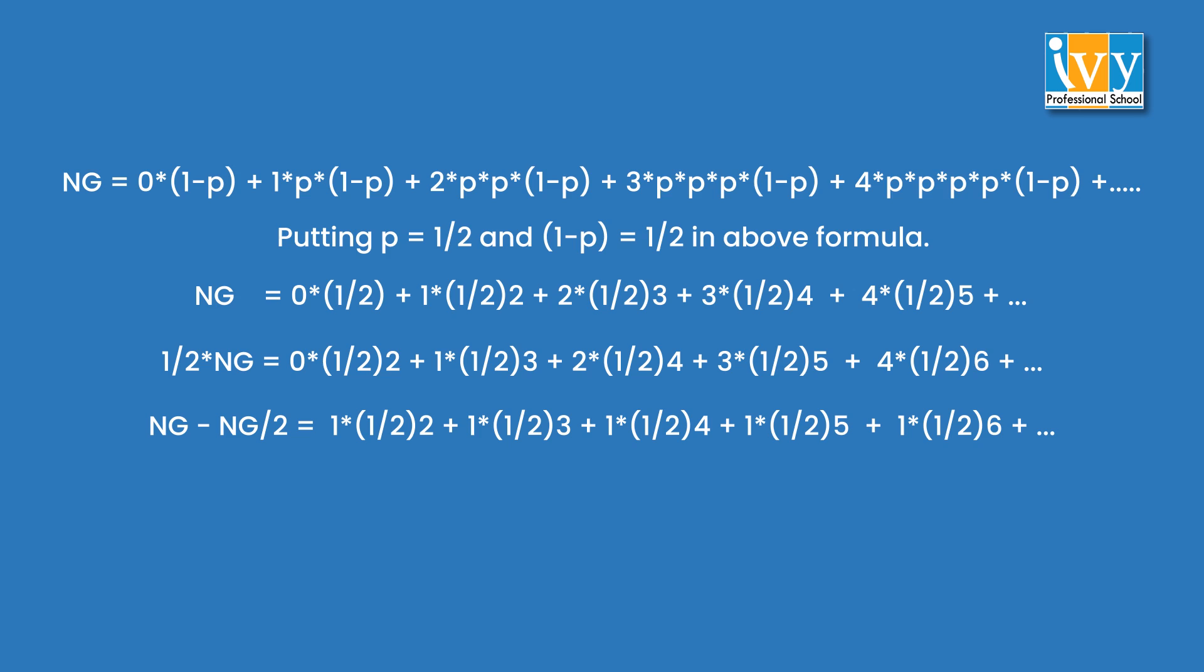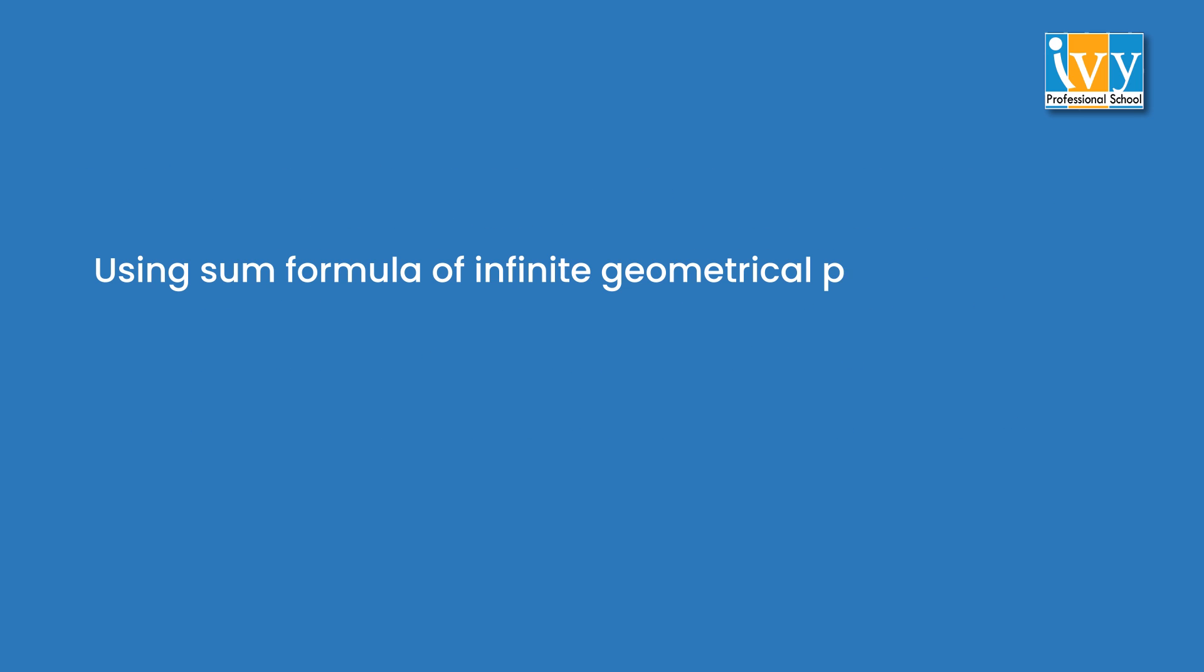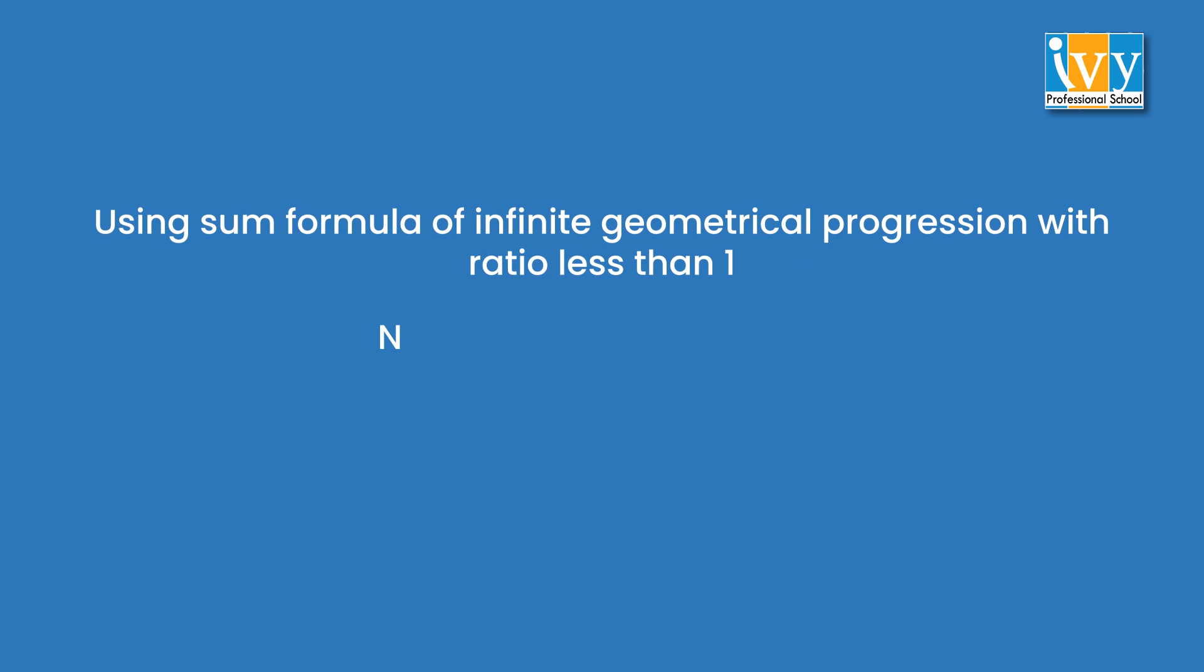Using the sum formula of infinite geometrical progression with ratio less than 1, NG by 2 is equal to 1 by 4 divided by 1 minus half, which is equal to half, which gives us the result that NG is equal to 1.